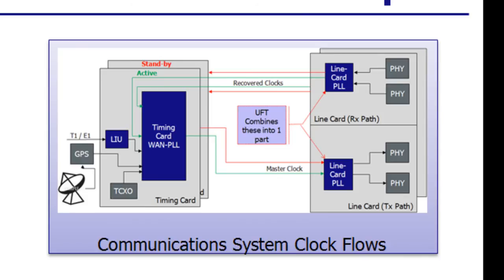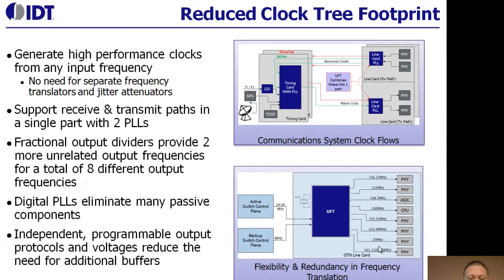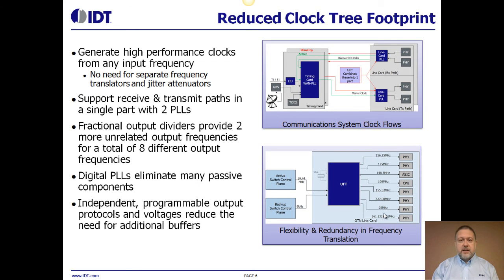As you can see from the block diagram, we're able to support the receive and transmit paths of a communications line card within a single device because it has two PLLs within it. Additionally, our fractional output divider technology — of which there are two within the device — allows further independent frequencies to be generated, for a total of eight different output frequencies within a single device. The device architecture supports a digital PLL driving an analog PLL, providing both flexibility and performance, and the use of the digital PLL eliminates many external passive components, reducing the footprint. Each of the outputs on the device is independently programmable — the output protocols can be selected from a large list, and the voltages can also be driven independently for each output, eliminating the need for external buffers in your system.